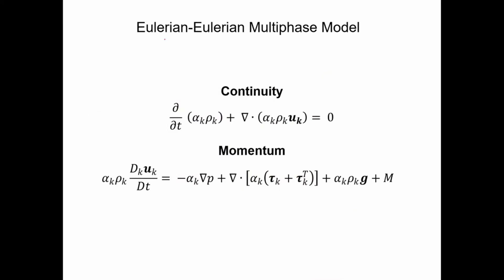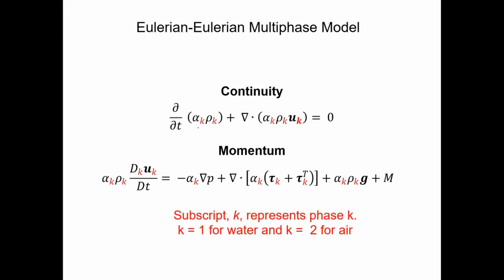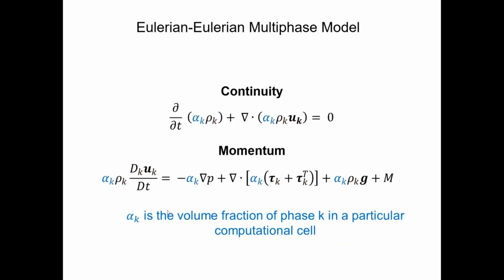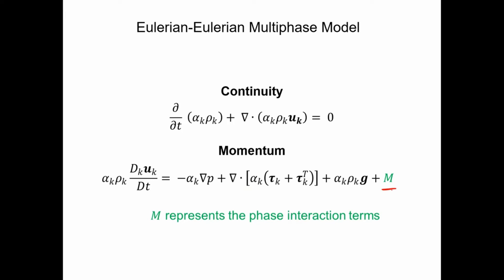For the Eulerian-Eulerian multiphase model, we solve momentum and continuity equations for both phases — K can be one or two for water or air. Every term in the equations has a volume fraction: if it's one, it's all water; if it's zero, it's all air. We solve for both phases in every cell. The key term is M, which represents the phase interactions between the two phases — the forces going between water and air, including a drag effect dependent on bubble sizes.